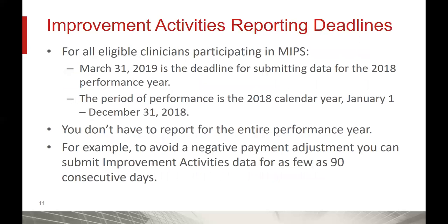This slide details some key reporting deadlines. For all eligible clinicians participating in the MIPS program, March 31, 2019 is the deadline for submitting data for the 2018 performance year. The performance period started January 1, 2018 and runs through December 31, 2018. For this reporting category, keep in mind that you don't have to report for the entire performance year — you just have to report each measure for a 90 consecutive day period. To avoid a negative payment adjustment, you can submit improvement activities data for as few as 90 consecutive days.